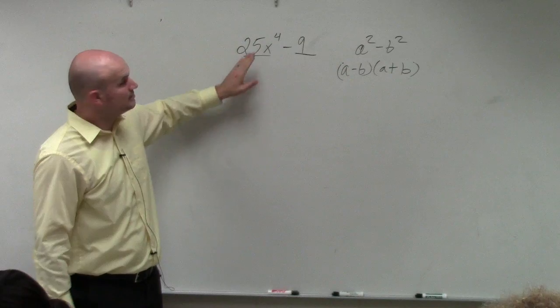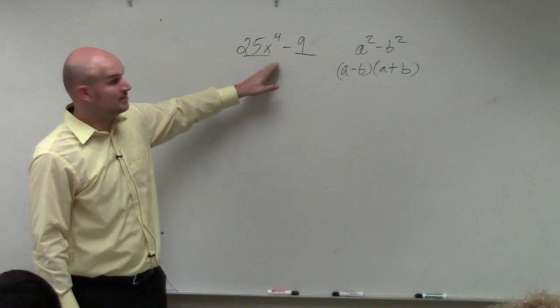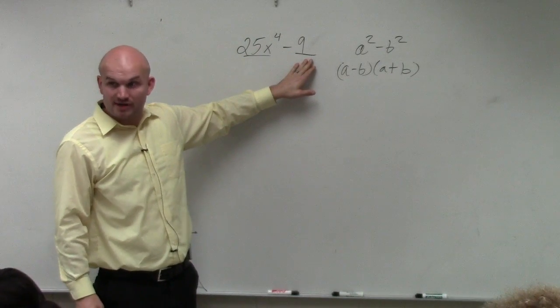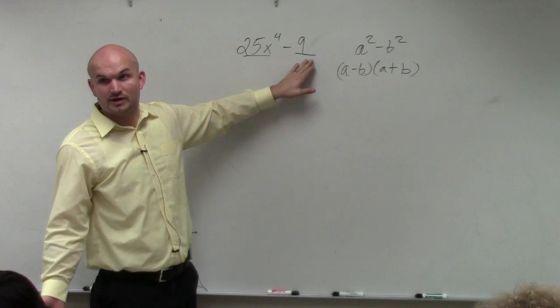Well, 25 is a square number. X to the fourth is a squared term. And 9 is a squared number. So therefore, I'm going to want to use the difference of two squares, right?